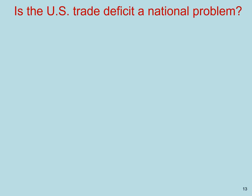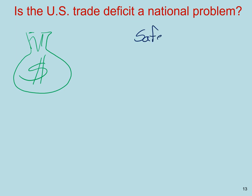So, is the U.S. trade deficit a national problem? Well, let's think about it. Around the world, there's been an increase in savings — economists have called this the savings glut. A lot of that capital has made its way to the United States because it is an attractive prospect for investment. But what makes the U.S. so attractive to foreign investors, even at such low interest rates? Let's call it safety and tech. These two are important factors bringing foreign capital to the United States.